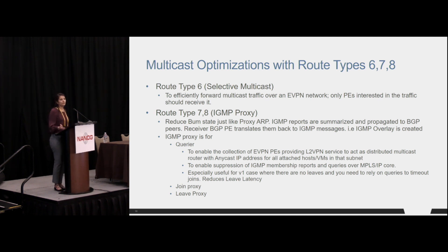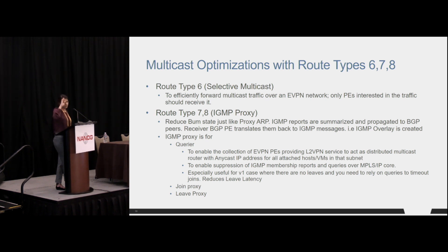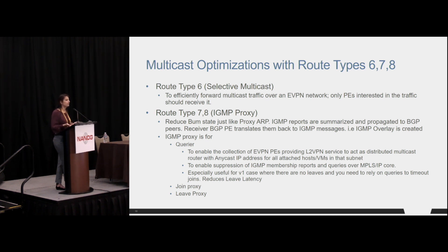For the bottom oval — the multi-access segment — we'll discuss route type seven and route type eight: mappings of the IGMP join and IGMP leave respectively. Route type seven is the IGMP join sync route in EVPN — a direct mapping of a real IGMP join received on an L2 segment. Route type eight is the corresponding leave message. The packet format includes a route distinguisher, an Ethernet segment identifier identifying the multi-access segment, and an Ethernet tag ID identifying the bridge domain.